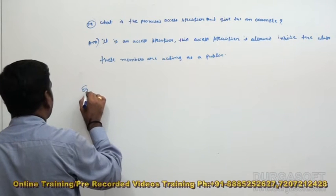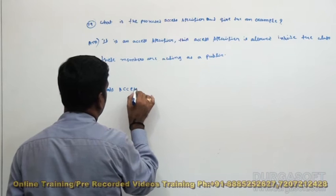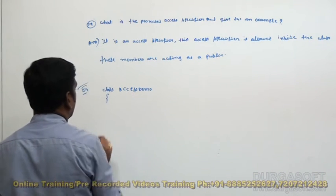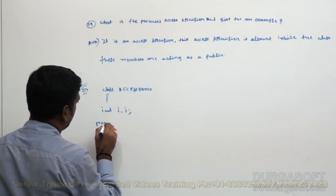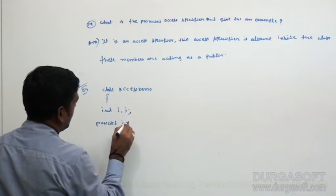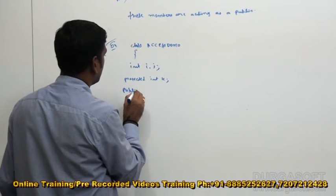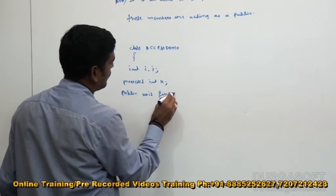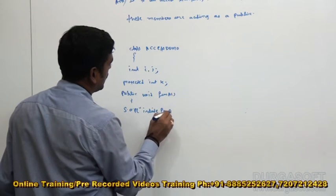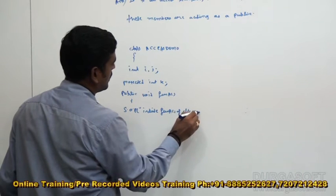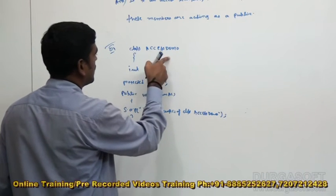Example. Now class AccessDemo — under that, I am taking int i, j, then protected int k. Next, public void functionA with System.out.println inside functionA. Half class AccessDemo, then close.